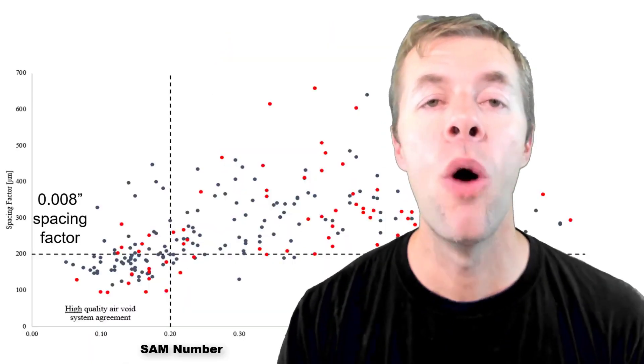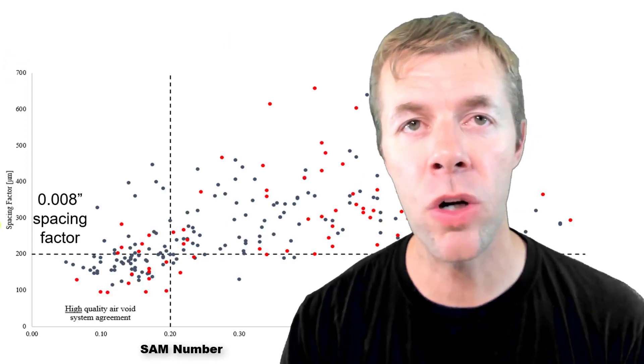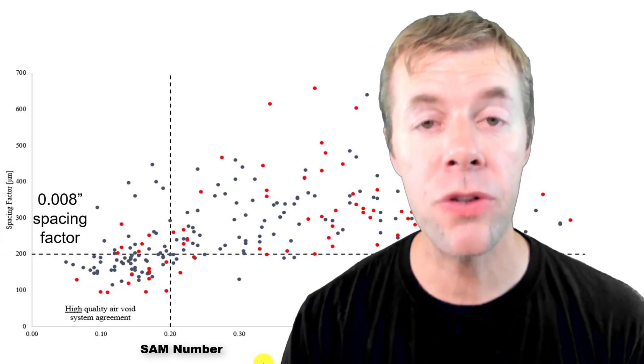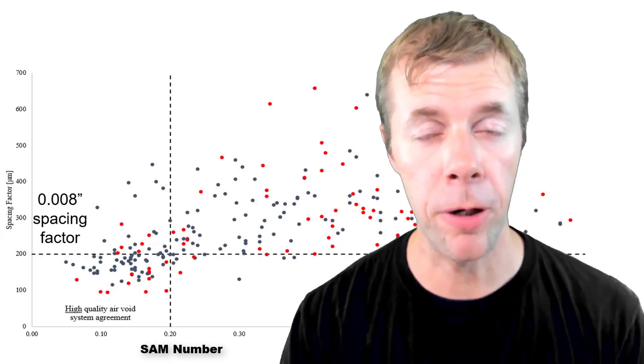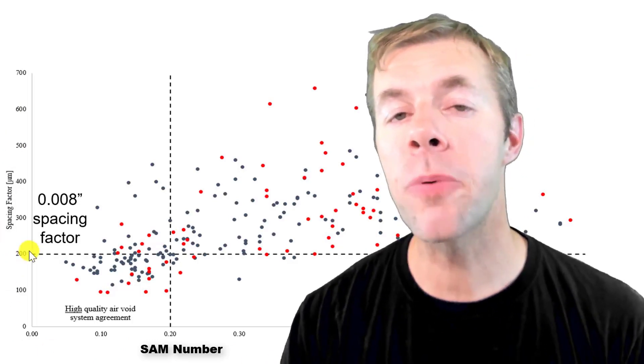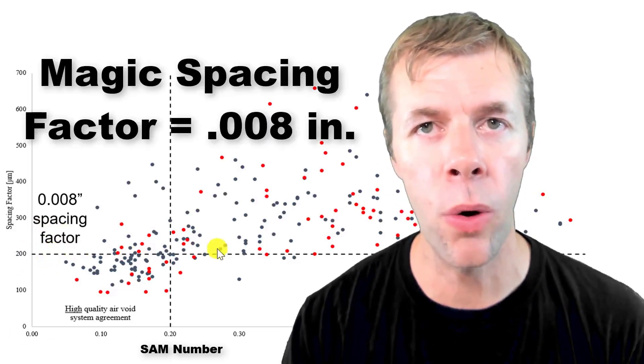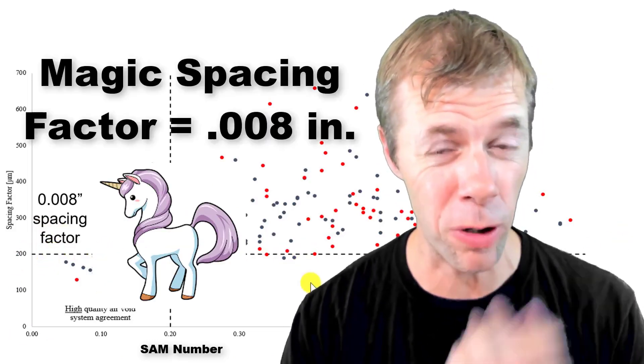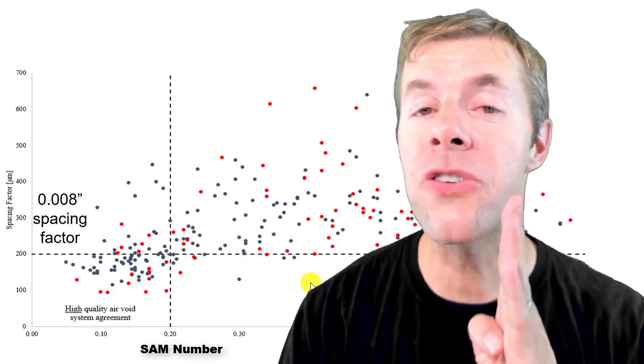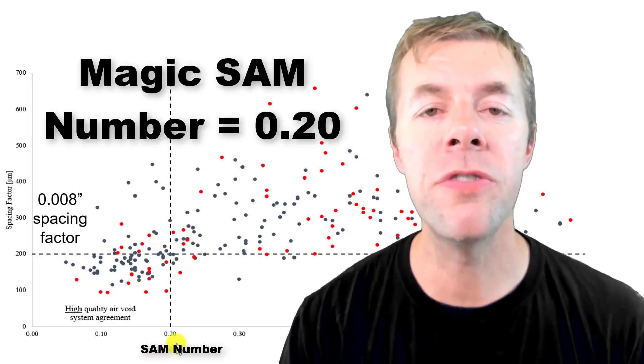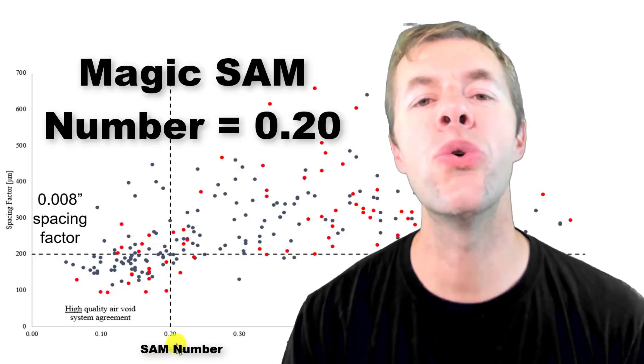In this graph we're plotting the spacing factor here on the y-axis and on the x-axis we're plotting the Super Air Meter number, the SAM number. Most experts agree that the spacing factor you want is 0.008 inches. It's kind of a mythical number and in the Super Air Meter if we want the same agreement we find we need a SAM number of 0.20.